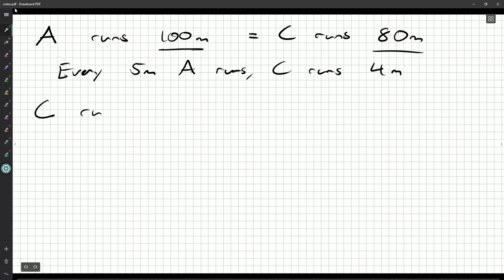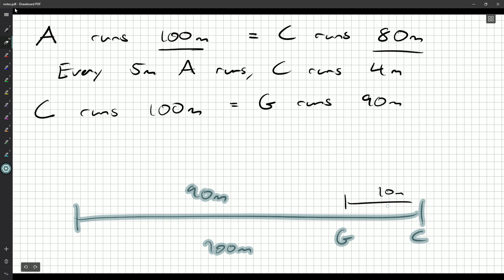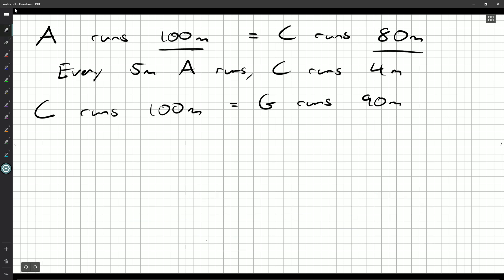Now, for our second race, Charlize runs, Charlize is the one that finishes. We've got our 100 meters. Charlize is at the end. Now, Greg is the one who's behind. Greg was 10 meters behind. So how far had Greg run? Well, if the total is 100 meters, Greg must have run 90 meters, because he's 10 meters from the end. So Greg runs 90 meters. Well, we can turn that into a ratio as well. Every 100 meters Charlize runs, Greg runs 90 meters.